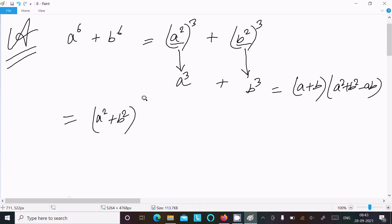And this here (a^2)^2 and the next is (b^2)^2 minus ab, a^2 b^2.